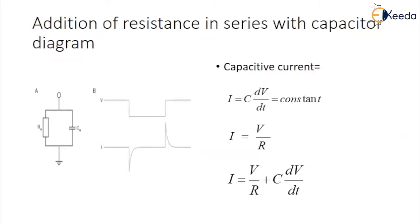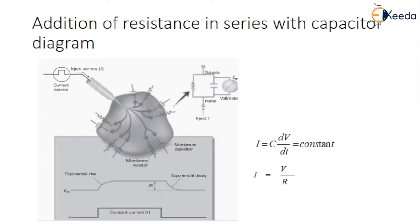Next is the addition of resistance in series with the capacitor diagram. In this slide it is shown the addition of resistance with the capacitor. The current flowing through the capacitor is given by i = C × dv/dt which is equal to constant. The current flowing through the resistance is given by Ohm's law, i = V/R which is connected with the capacitor. And the total effect of capacitance and resistance is given by i = V/R + C × dv/dt.